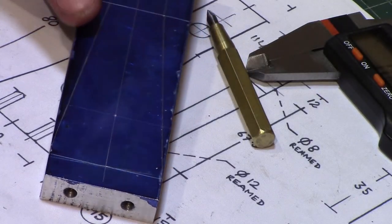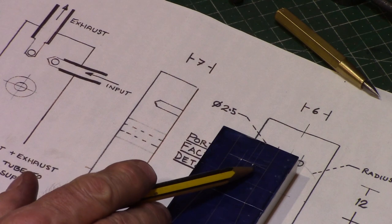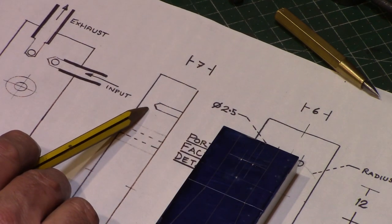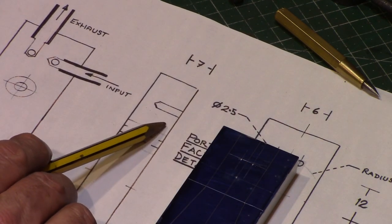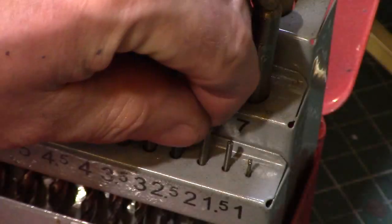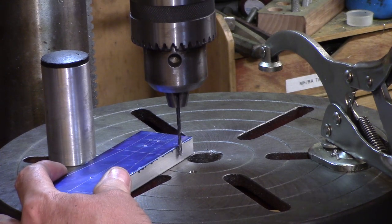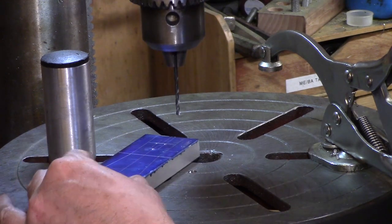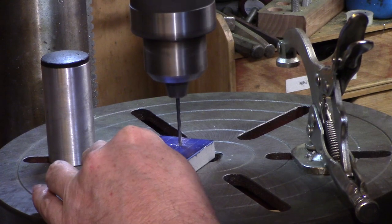Two holes need to be drilled for the input and exhaust ports and these are blind 2.5mm holes to a depth of 7mm. A 2.5mm drill was fitted to the chuck and the depth was set on the drill press. The holes were then drilled to the set depth.